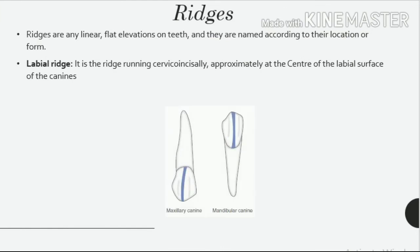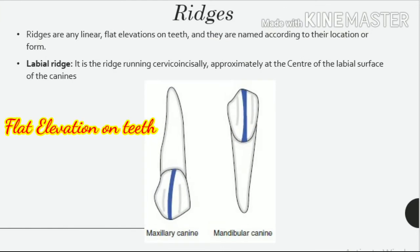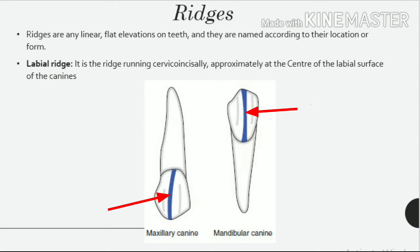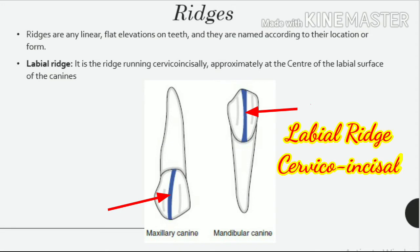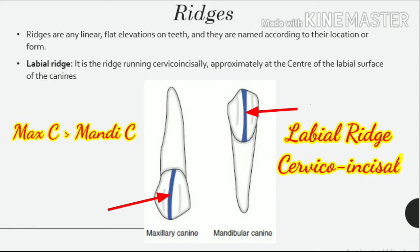Ridges. Ridges are any linear, flat elevations on teeth and they are named according to their location or form. Several specific types of ridges can be identified. Labial ridge: it is the ridge running cervico-incisally, approximately at the center of the labial surface of the canines. It extends from the cusp tip to the cervical region of the tooth, and is very prominent in maxillary canines compared to mandibular canines.